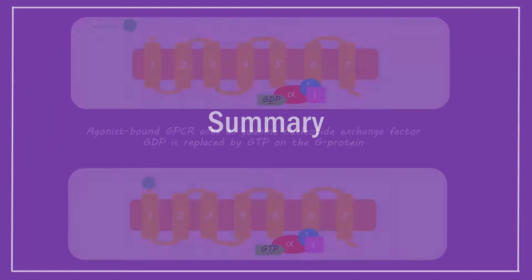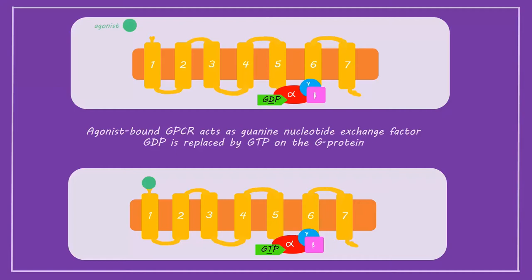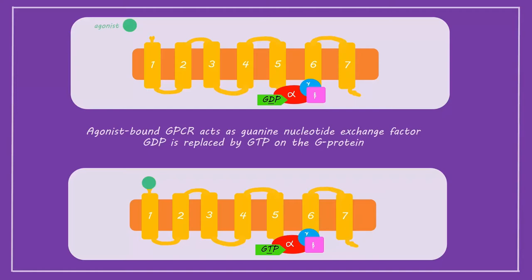In summary, we've looked at metabotropic GPCRs, which when bound by a variety of ligands can act as guanine nucleotide exchange factors, resulting in activation of the coupled G-protein. GPCRs can activate many G-proteins from one bound ligand, which leads to signaling amplification in cells. And as you will appreciate, this is useful from both a physiological and pharmacological perspective. Thank you for listening.